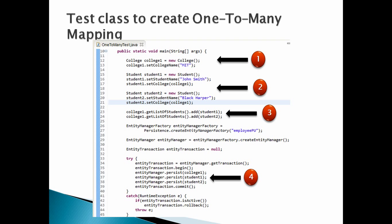Let's create a test class to demonstrate one-to-many mapping and discuss the code point by point. Number one: create a college instance having college name as MIT. Number two: create two student instances — student one having student name as John Smith, and set college to student one with the college instance created above; student two having student name as Black Harper, and set college to student two with the college instance created above. This will tell Hibernate that John Smith and Black Harper study in MIT.